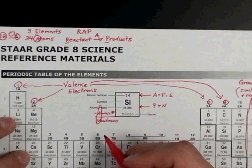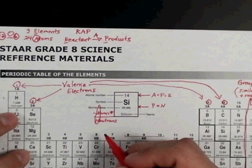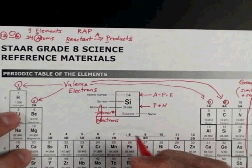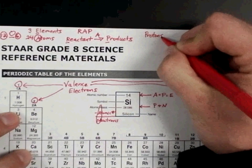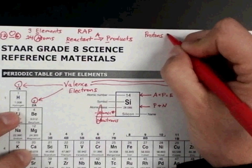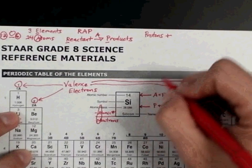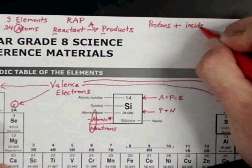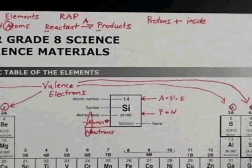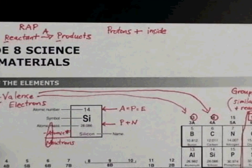Okay, now let's go to the subatomic particles. We're going to be talking about protons, neutrons, and electrons. First, we're going to talk about protons. Protons, and we're going to list the charge, which is positive. They are found inside the nucleus.